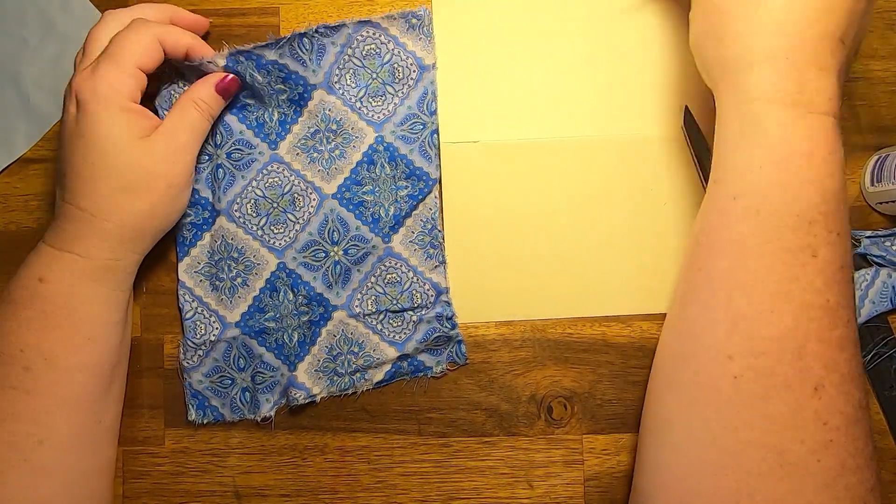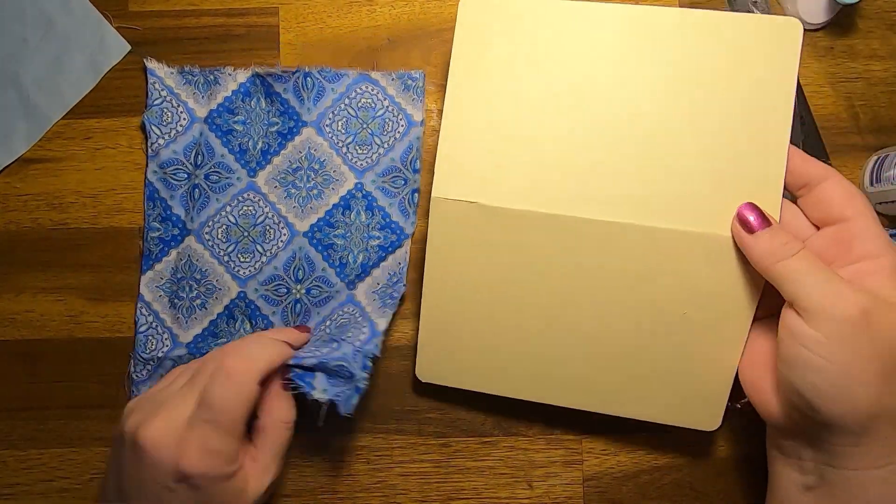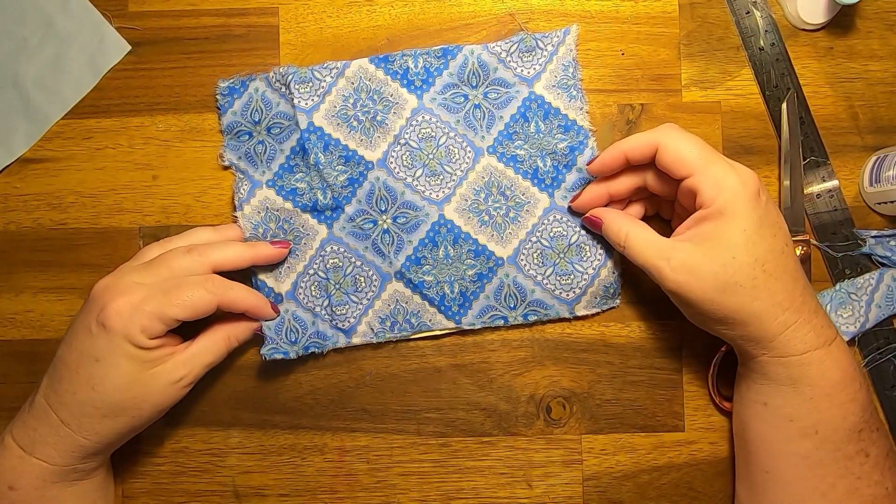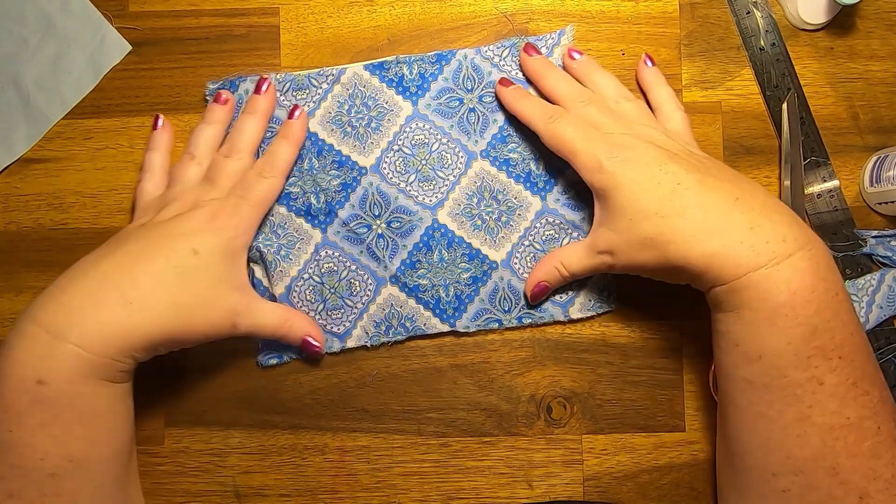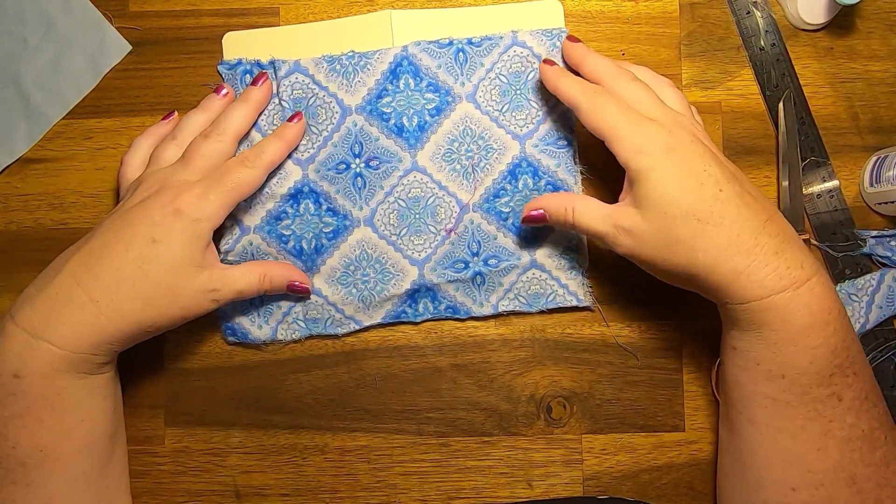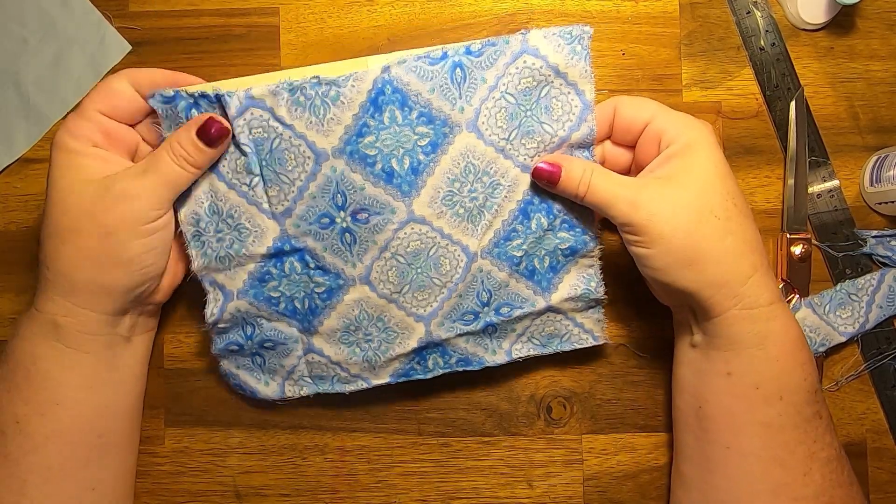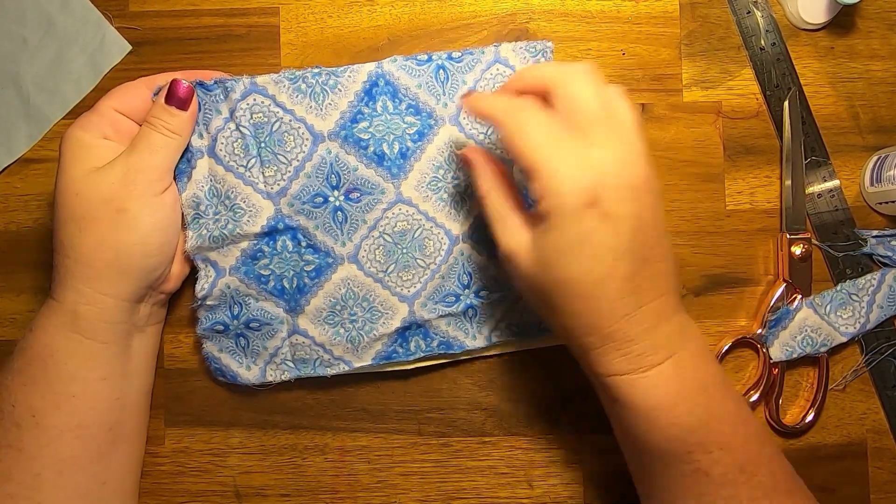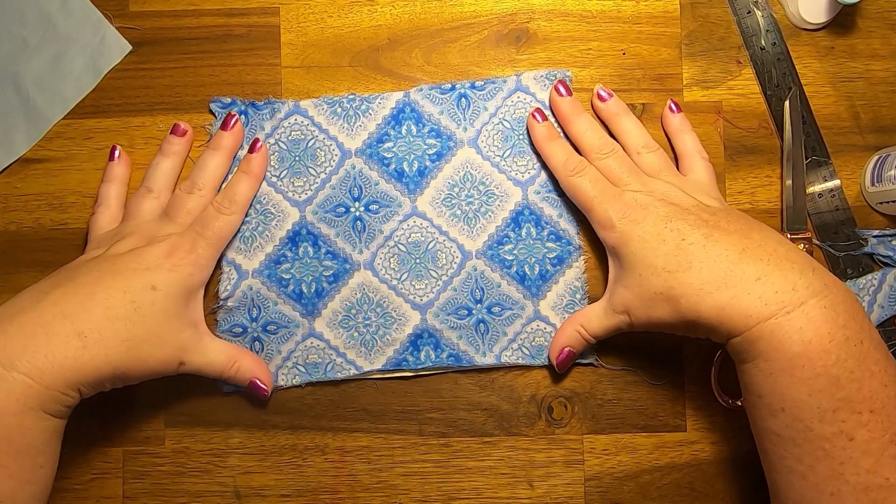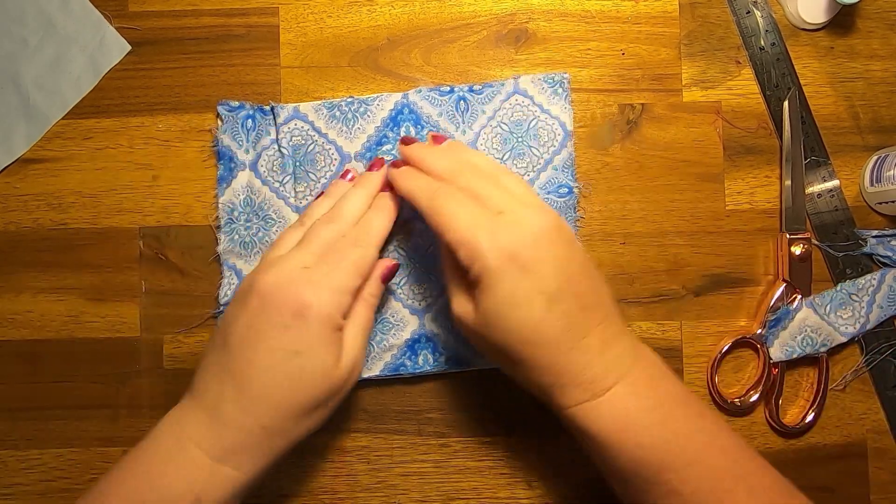Unless you want really long frays around the outside which could look cool too. Which side do we want? Do we want the intricate design or do we want the back side which is more of a wash? That might be cool. It's got lots of fluff on it. I think I like that back side better. Yeah, I'm going to use that.